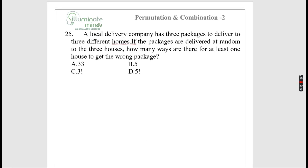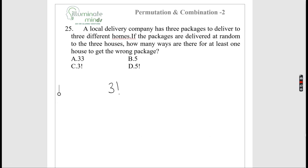A delivery company has 3 packages for 3 different homes, delivered at random. Total arrangements = 3! = 6. Only 1 way is fully correct. So the number of ways at least one house gets the wrong package is 6 − 1 = 5. Option B is correct.